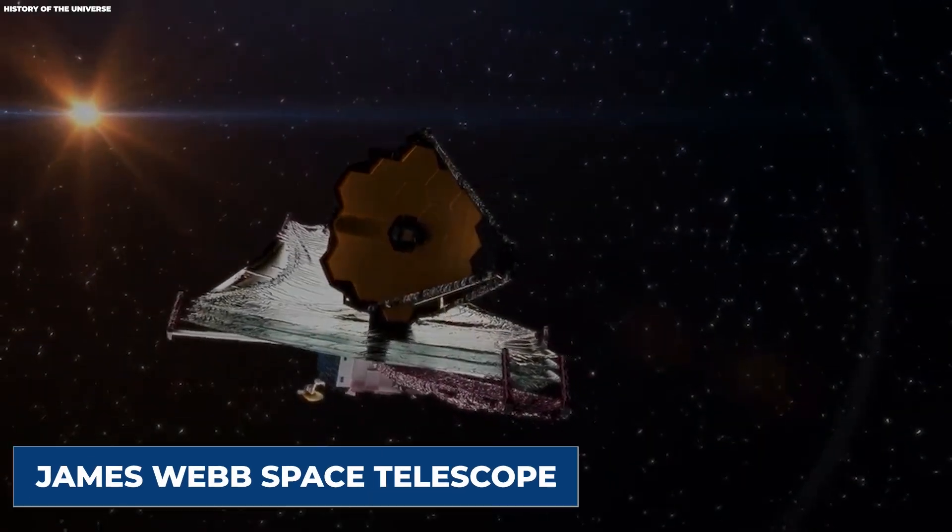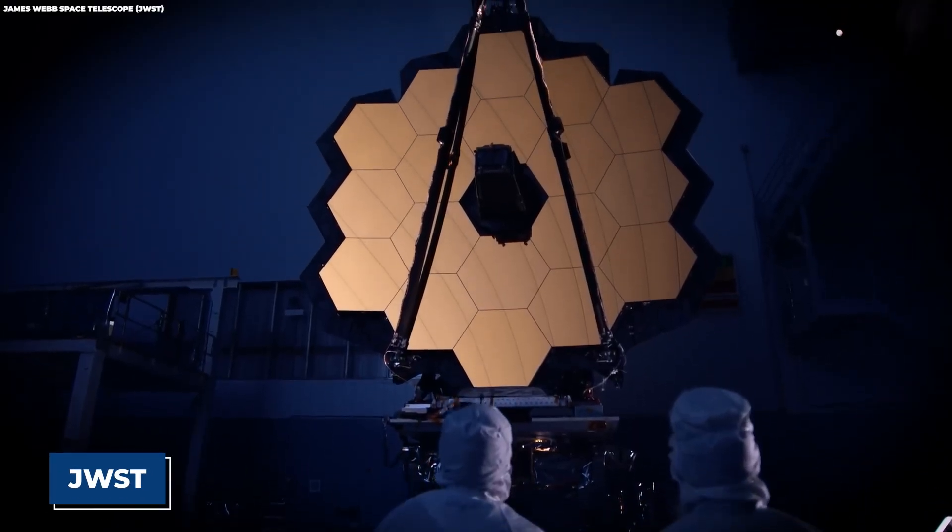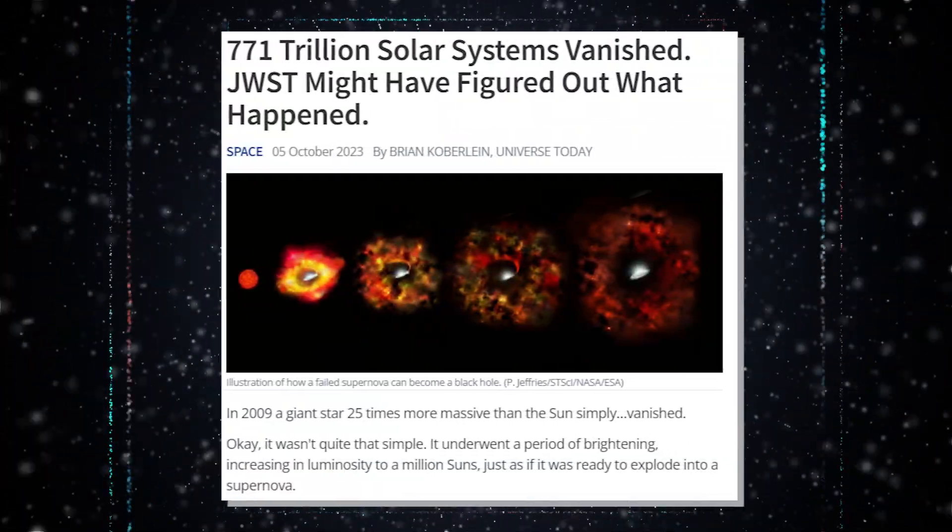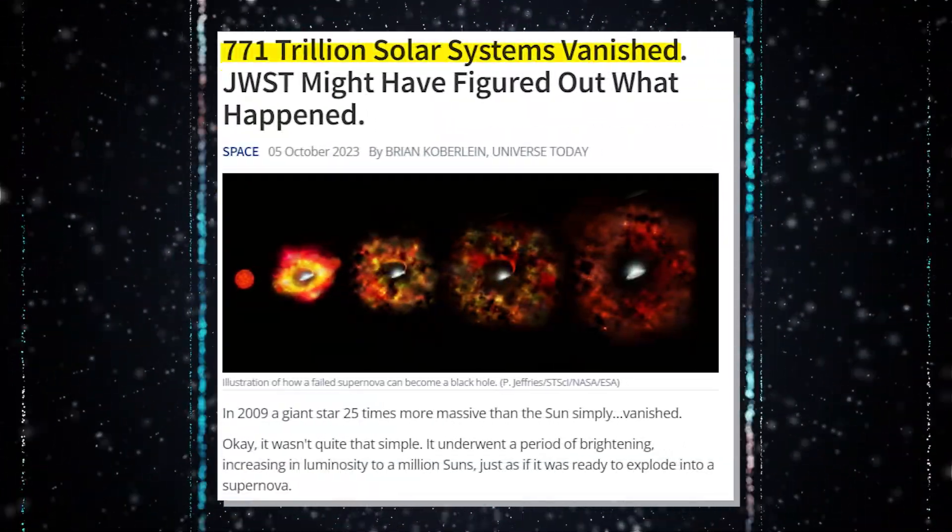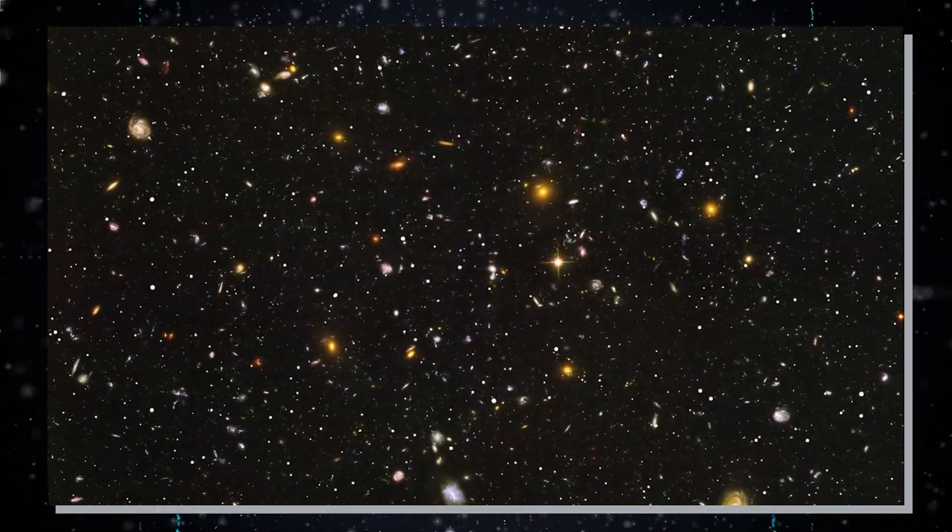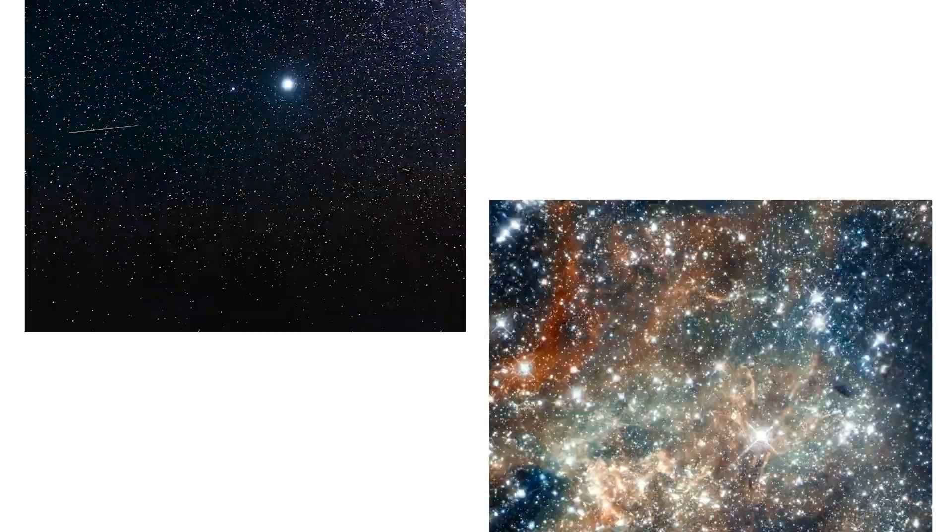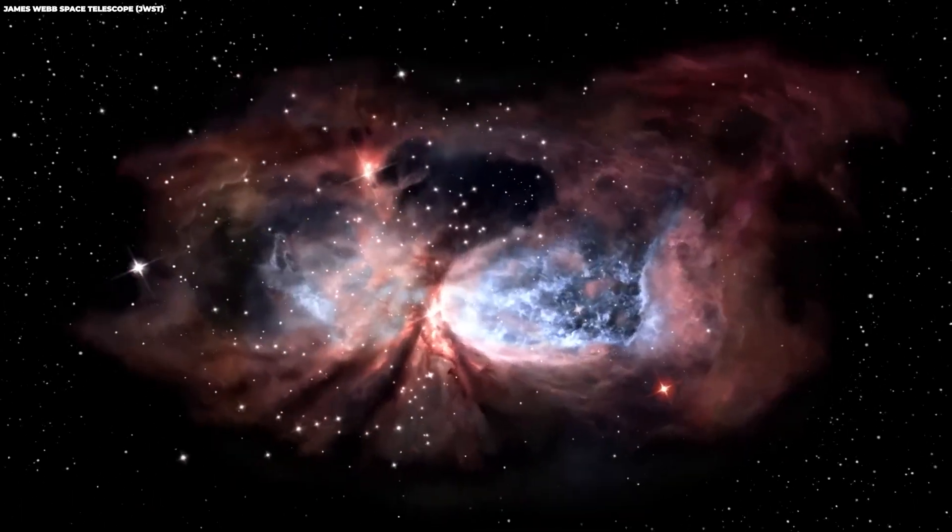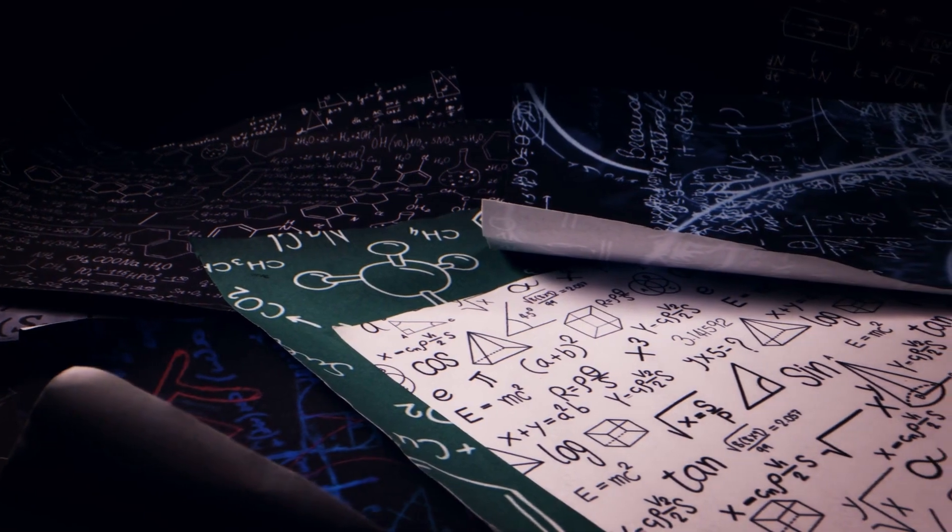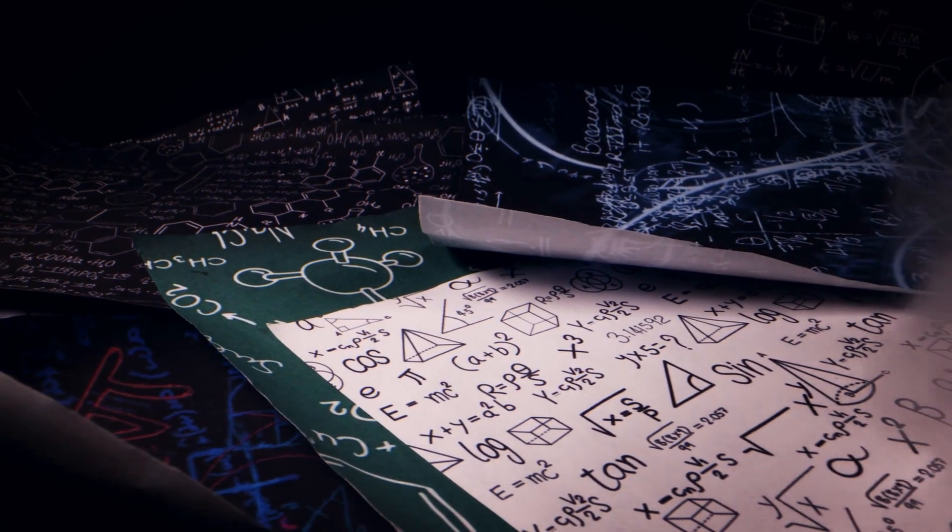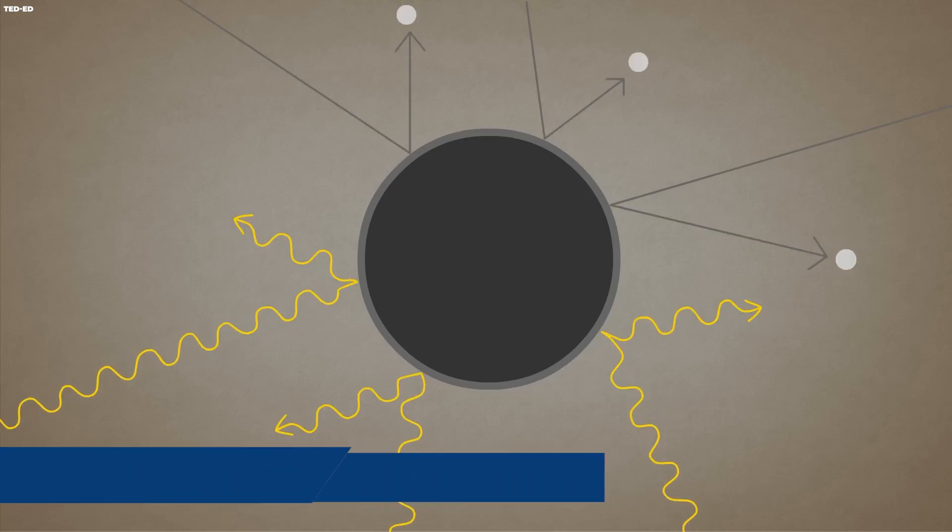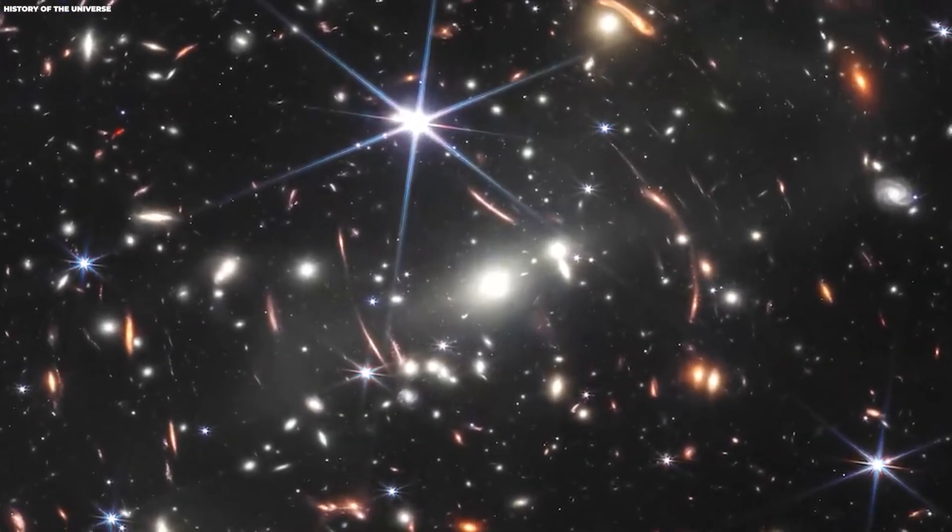The James Webb Space Telescope, popularly called the JWST, has recently made a surprising discovery, revealing that more than 771 trillion solar systems have mysteriously vanished from our universe. This disappearance encompasses stars and their associated planets, presenting an abnormal occurrence. Strikingly, this event contradicts one of the fundamental laws of physics known as the law of conservation of matter. How does this contradict this important law?